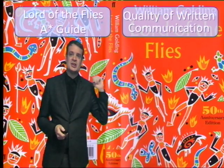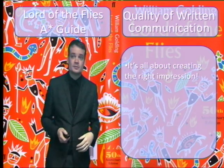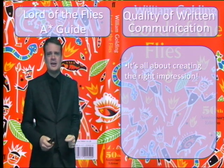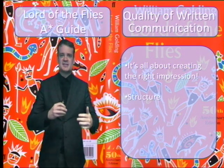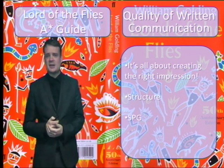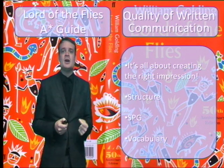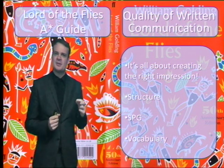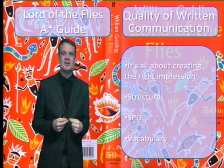Quick recap — quality of written communication. It's a limiting factor: if it's not good enough, you won't hit band six, you will not get your A-star. It's all about creating the right impression — the examiner's got to look at your work and think this candidate knows what they're doing. You've got to structure your work appropriately: make sure the quotation stands out and they can see the structure of your paragraphs on the page. You've got to get your spelling, punctuation, and grammar right — don't be lazy with it, proofread if you have to. And then up-level that vocabulary: take some risks with ambitious vocabulary, thinking particularly about characters' feelings, because that's where you're going to have the vocabulary to really lift it up. Good luck in the exam.